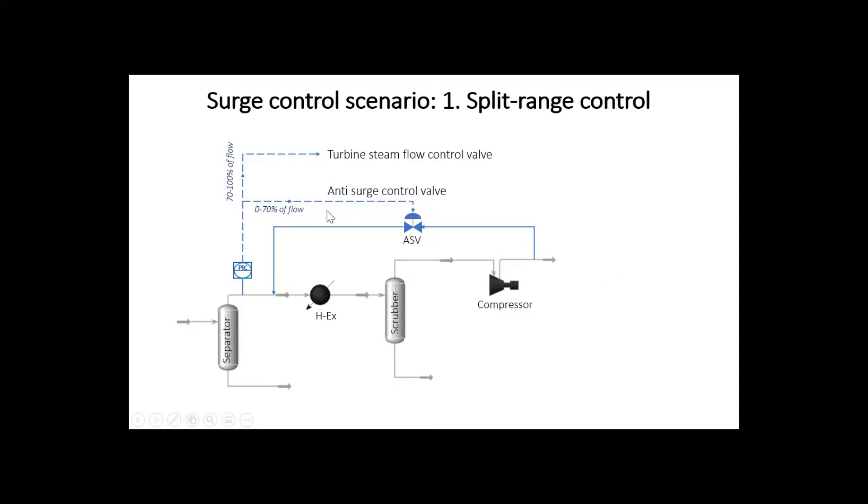We have here split range anti-surge control system, which includes two control elements, two control valves to manipulate two variables: the compressor speed and flow rate in the anti-surge line.